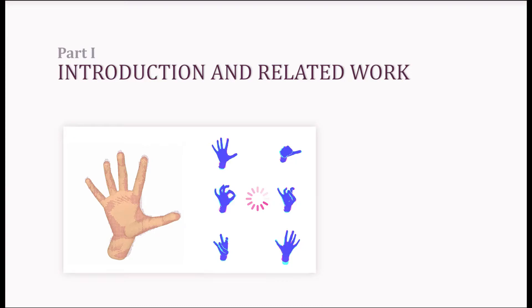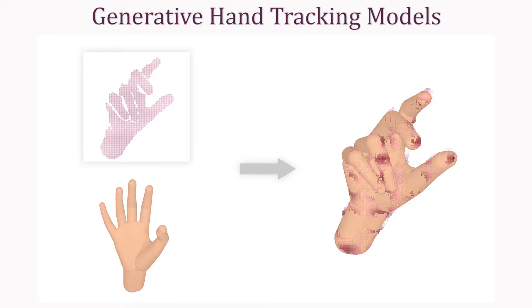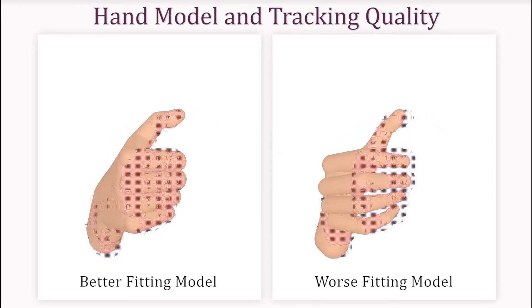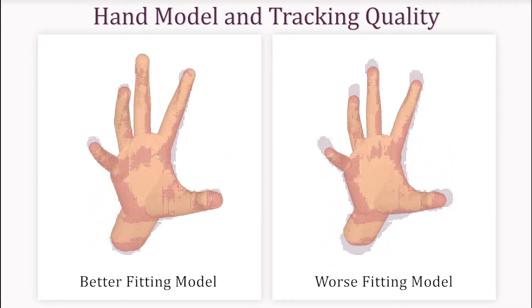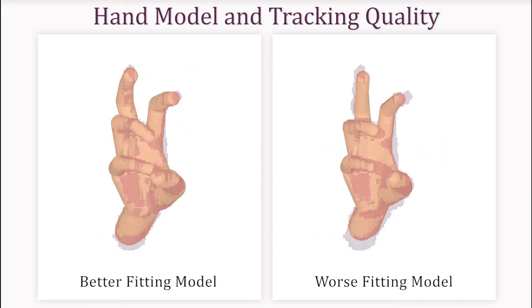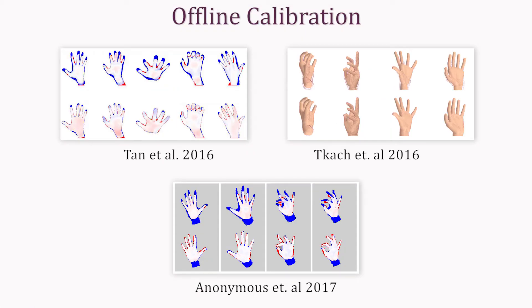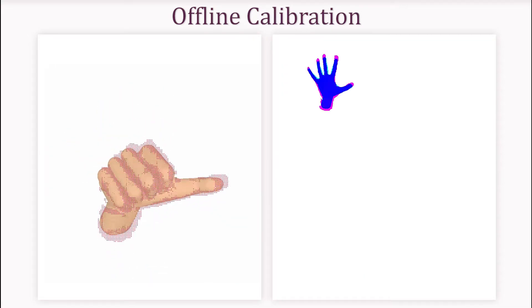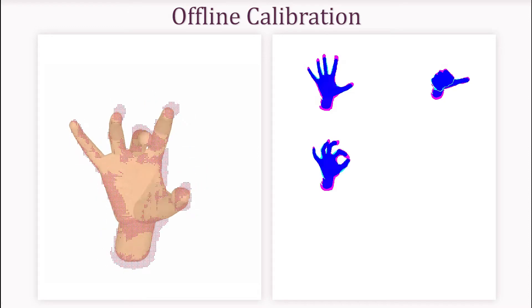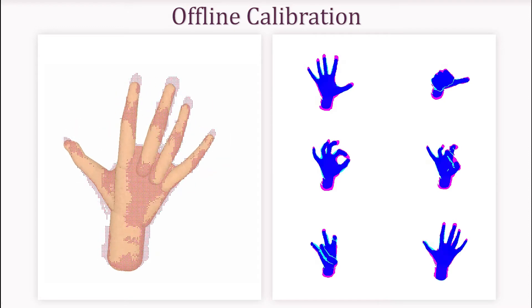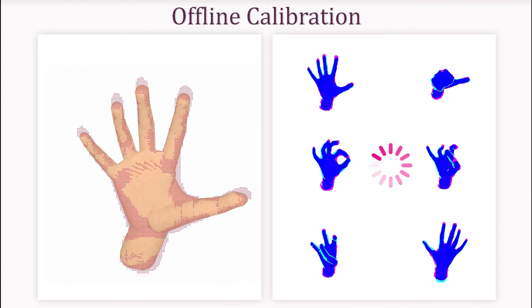Generative hand tracking algorithms register a geometric model of the human hand to sensor data. Tracking quality depends on how well the model fits the user being tracked. State-of-the-art tracking algorithms calibrate by jointly fitting a model to a small set of input frames. Current solutions require the user to select these frames manually while tracking with an uncalibrated model, and then wait for the calibration algorithm to finish.